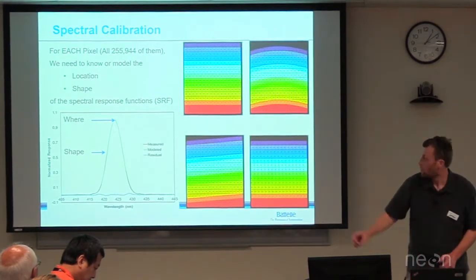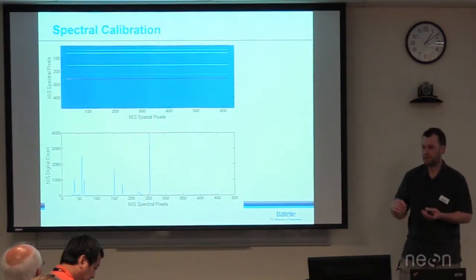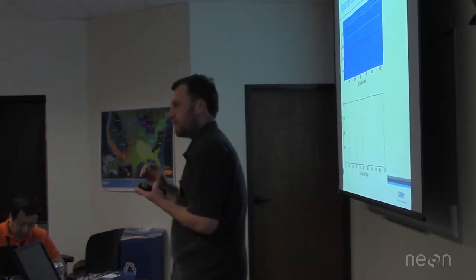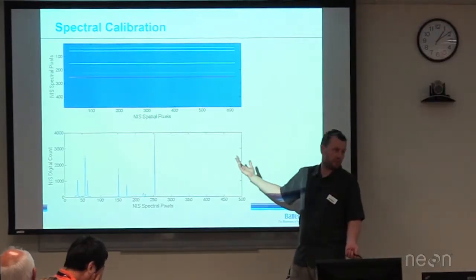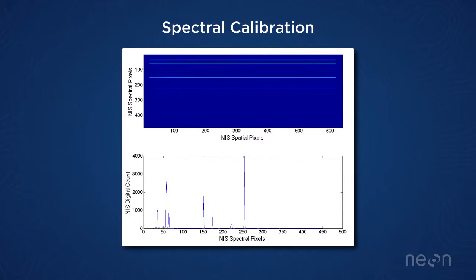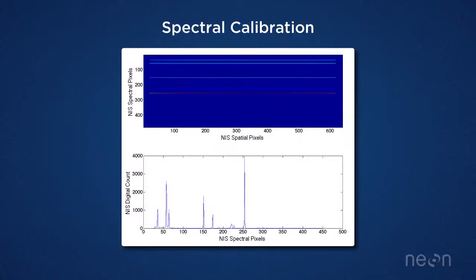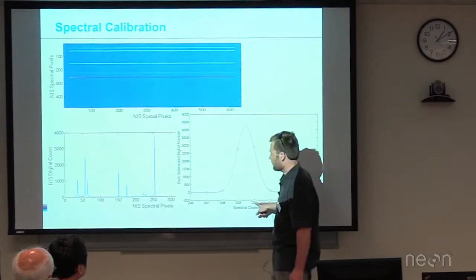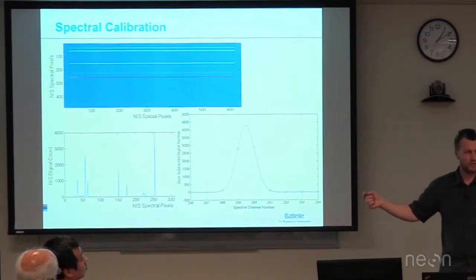One of the ways we determine where the spectral response function is located is to use emission line sources — whether a laser, mercury lamp, or other choices — and put that into the sensor. Since they're emission lines, we know exactly what wavelengths those are, and then we figure out where they fall on our detector. This is an example from a mercury lamp. You can see multiple lines, and a profile through the detector shows distinct peaks. We know where those peaks are and what pixel they fell on. Zooming in on one peak, you can see the tails illuminate other pixels, so we can figure out where the center is. We do this for all spatial pixels for each line.